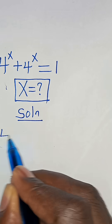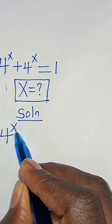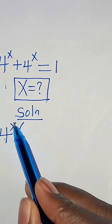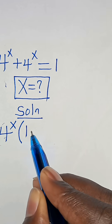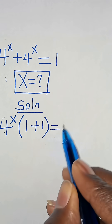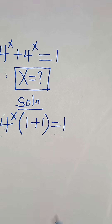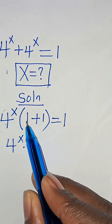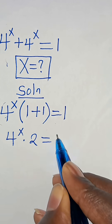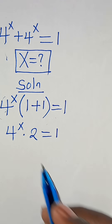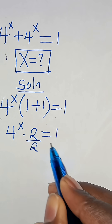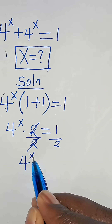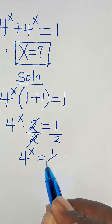We have 4 to the power of x is common here, so we can factor out 4 to the power of x. Into the parenthesis: 4 to the power of x divided by 4 to the power of x is 1, plus 1. This is equal to 1. So we have 4 to the power of x times 2, which equals 1. Dividing both sides by 2, we get 4 to the power of x equals one half.